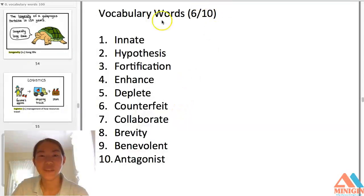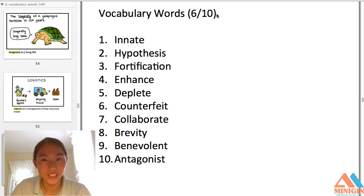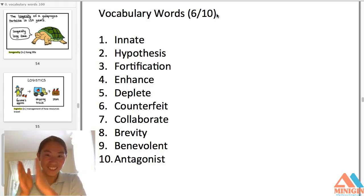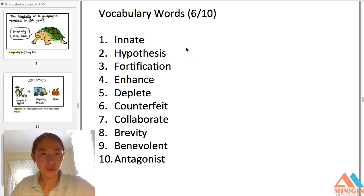Hey guys, welcome to vocabulary words, lecture six out of ten. You have memorized 50 new vocabulary words, so congratulations! After this, you will have memorized 60 vocabulary words. Let's get started — from 'innate' to 'antagonist'.